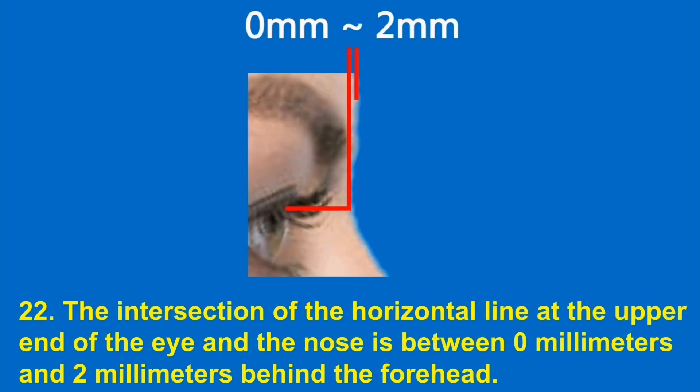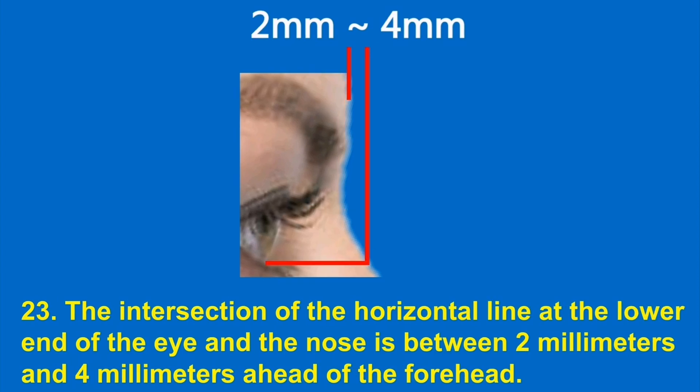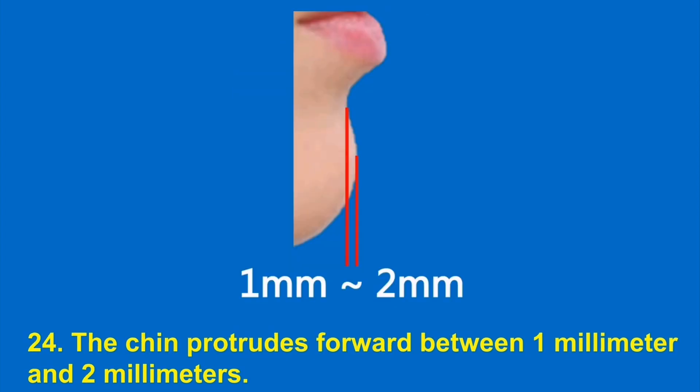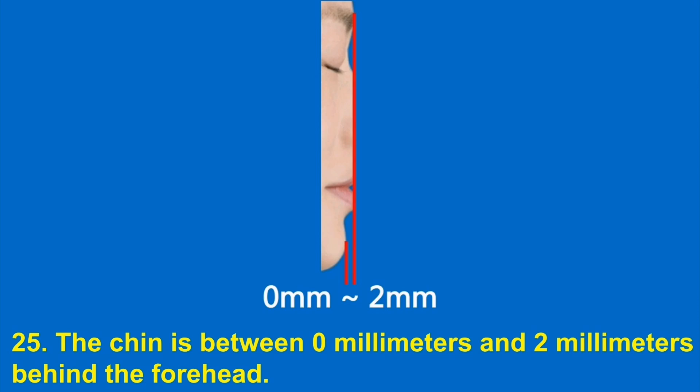21. The eye is between 6 millimeters and 1.2 centimeters behind the forehead. 22. The intersection of the horizontal line at the upper end of the eye and the nose is between 0 millimeters and 2 millimeters behind the forehead. 23. The intersection of the horizontal line at the lower end of the eye and the nose is between 2 millimeters and 4 millimeters ahead of the forehead. 24. The chin protrudes forward between 1 millimeter and 2 millimeters. 25. The chin is between 0 millimeters and 2 millimeters behind the forehead.